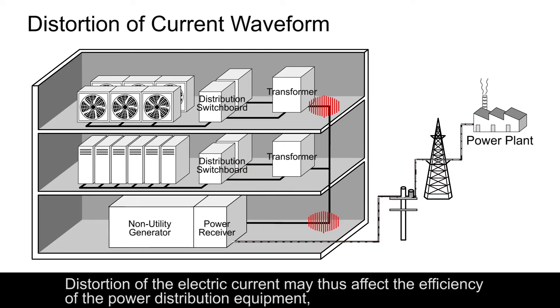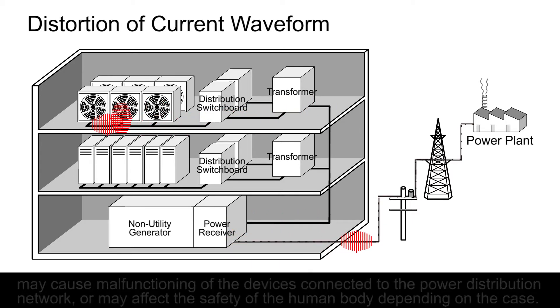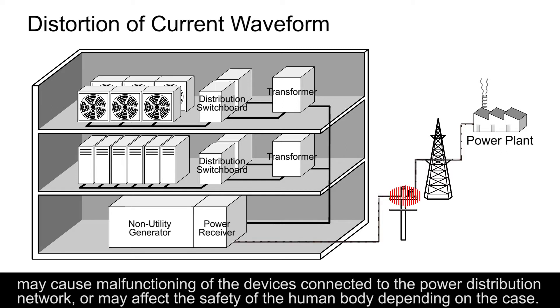Distortion of the electric current may affect the efficiency of the power distribution equipment, may cause malfunctioning of the devices connected to the power distribution network, or may affect the safety of the human body depending on the case.